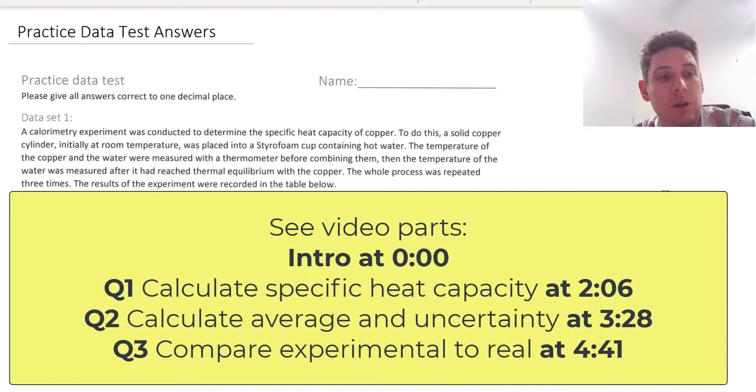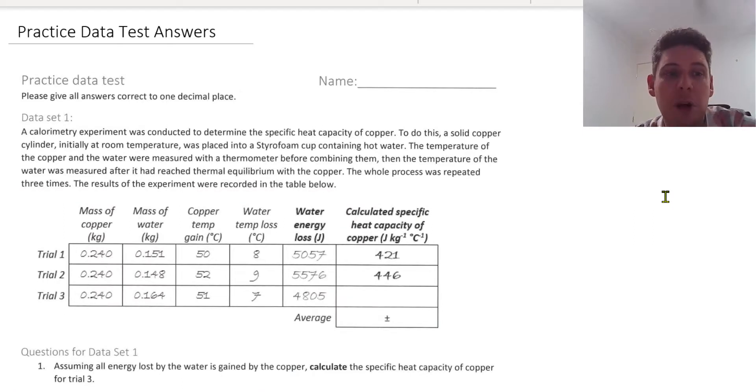So let's have a look at the first question. An experiment was conducted to determine the specific heat capacity of copper. When you've got a big piece of information like this, you might like to peruse through and think about what's some key information. So initially it was all at room temperature. A solid copper cylinder was at room temperature and was placed inside a styrofoam cup with hot water.